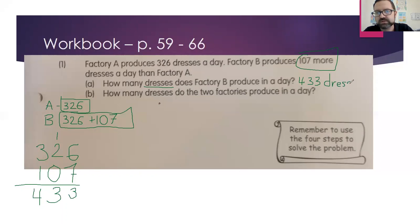Also make sure you are using a unit of measurement. What are we measuring? What are we trying to figure out? The answer is not just 433, it is 433 dresses. So with these word problems, sometimes we're counting dresses, sometimes we're counting books, sometimes we're counting money. Make sure you know what you're counting. So we know that Factory B makes 433 dresses a day.